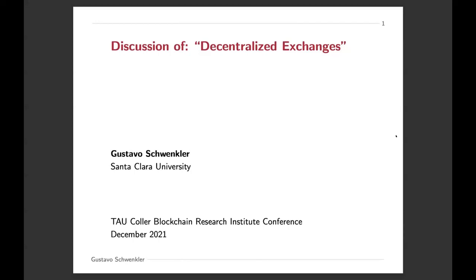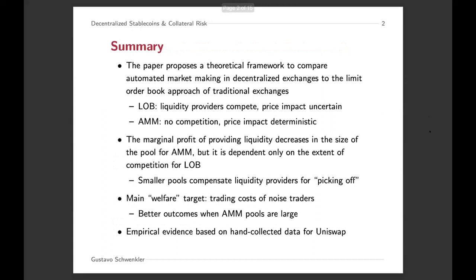Thank you so much for giving me the opportunity to discuss this paper. This paper really feels like the popular kid on the block these days because I've seen it at almost every conference. It's a great opportunity for me to actually dig into it and really understand what it does because I think it's a really neat paper. A brief summary: what the paper does is it proposes a theoretical framework to compare automated market making and decentralized exchanges to the traditional limit order book approach that traditional exchanges use.